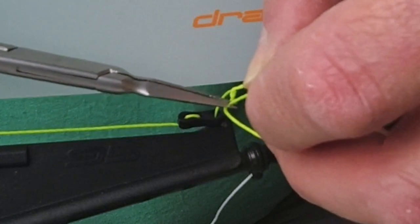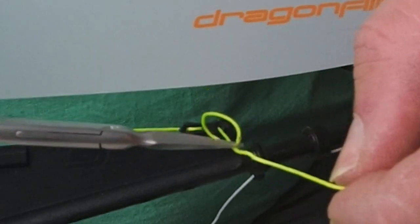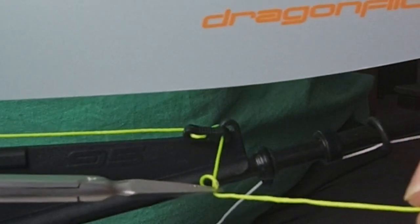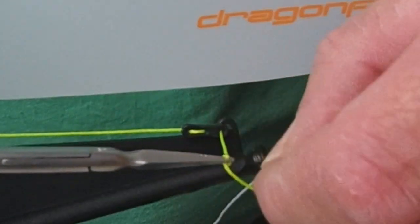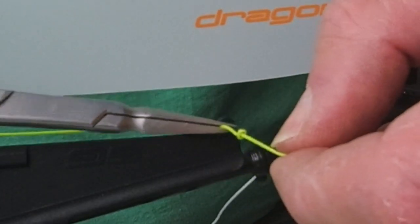Place the return loop of the knot behind the mark and then hold the mark with some tweezers. Then pull the running end to tighten the knot, and the tweezers will prevent the knot from moving beyond your mark.